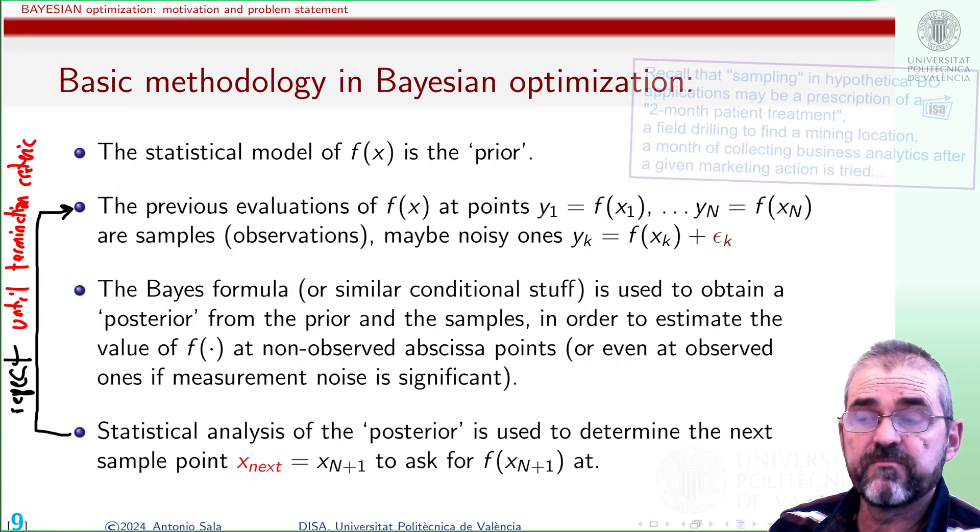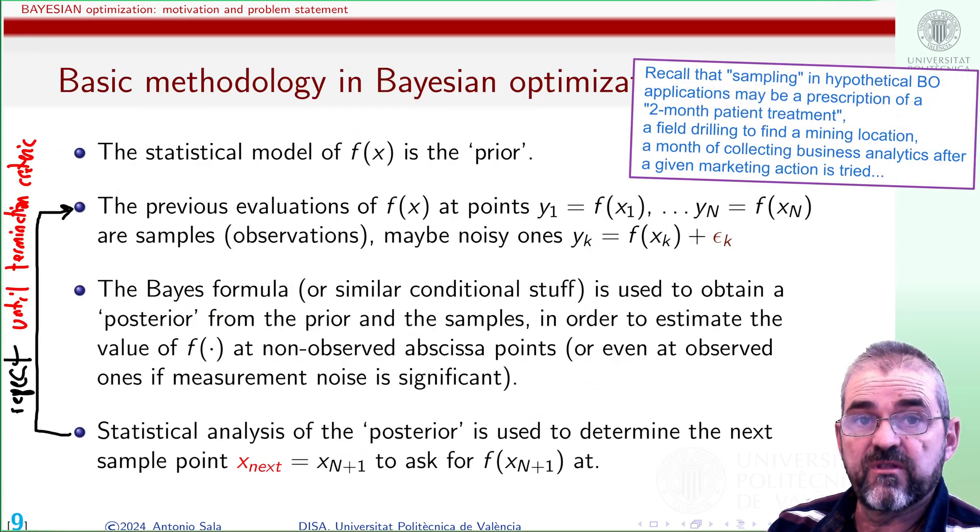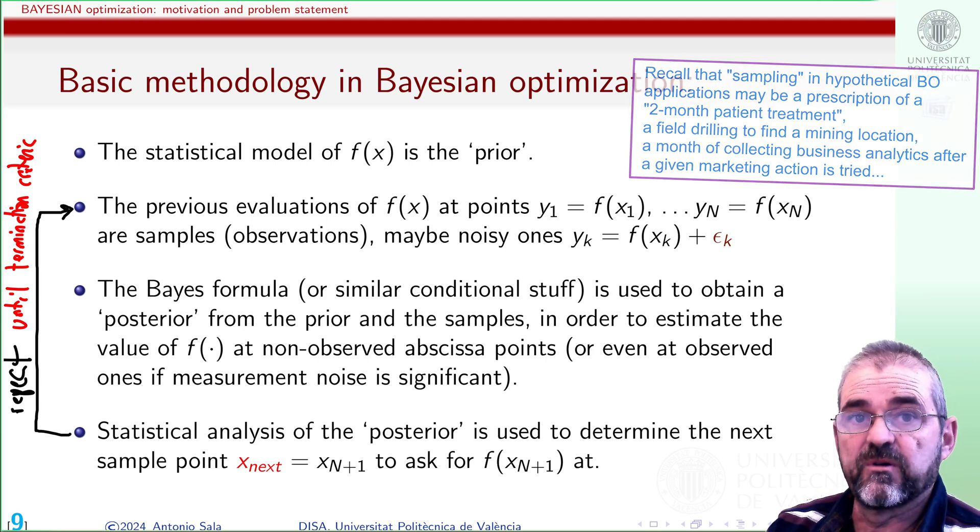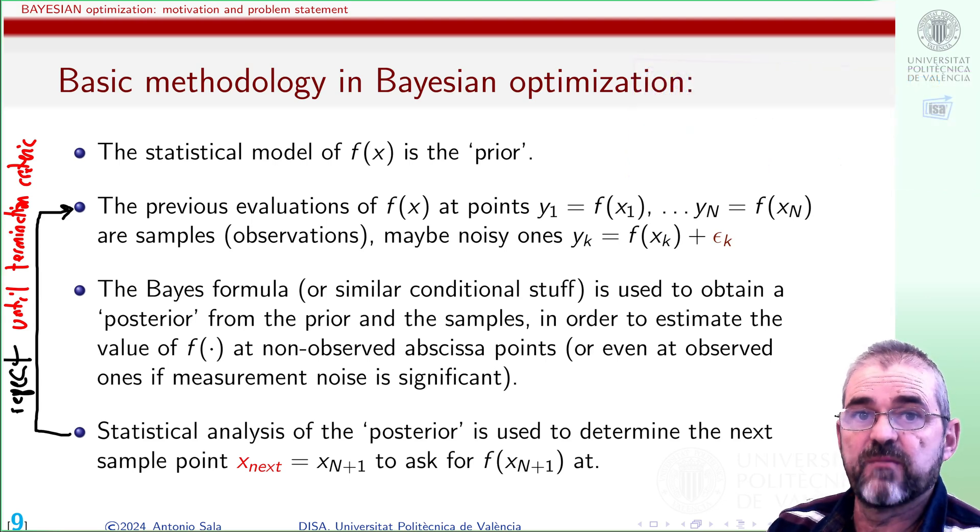Then we get samples, we compute the posterior with some formula we will review in a minute, and we decide via statistical analysis which is the next sample to do. We repeat until some termination criteria, either number of samples or certainty about the optimum points location, are met.